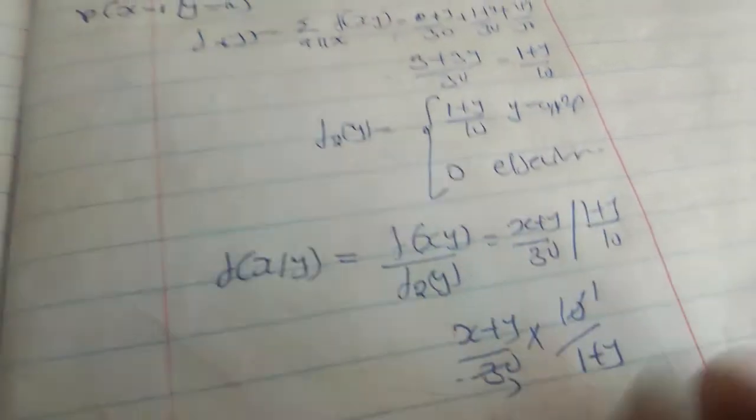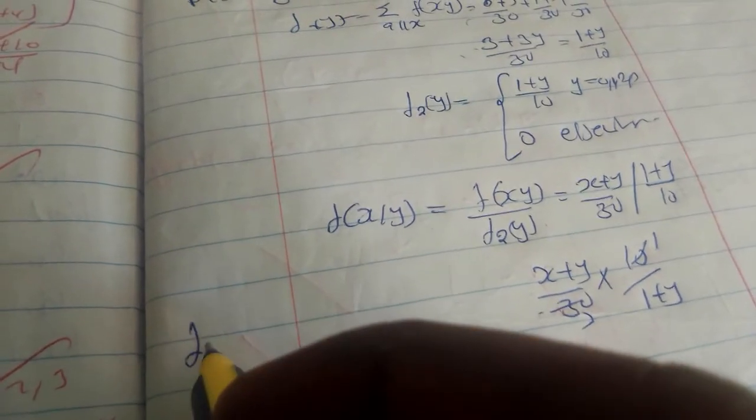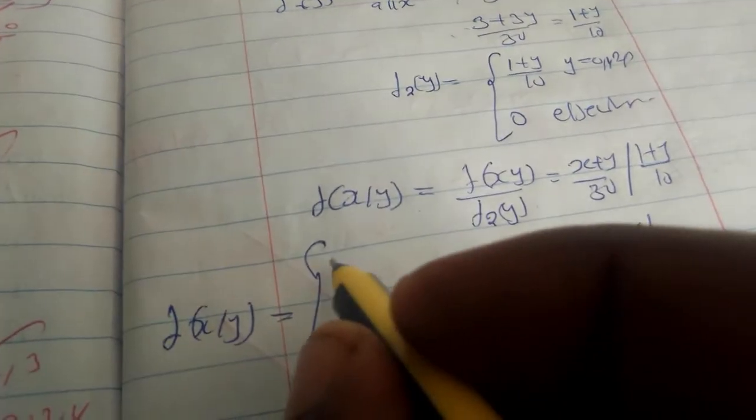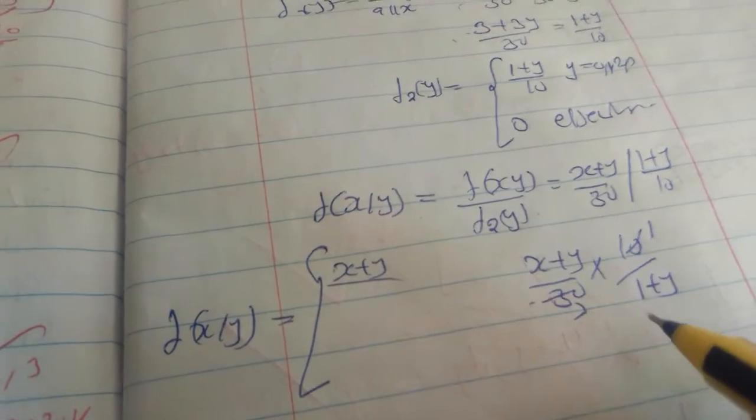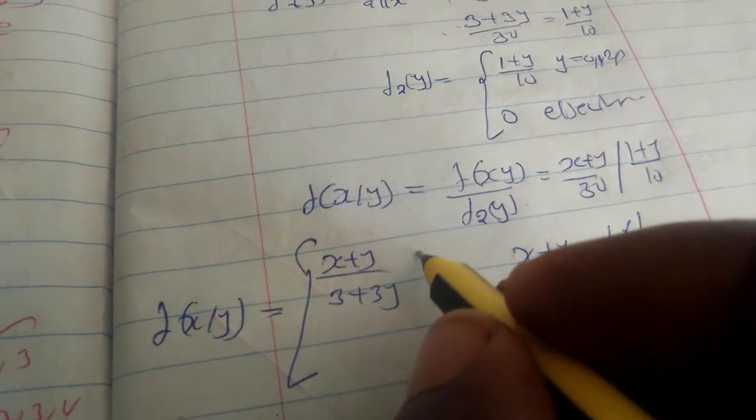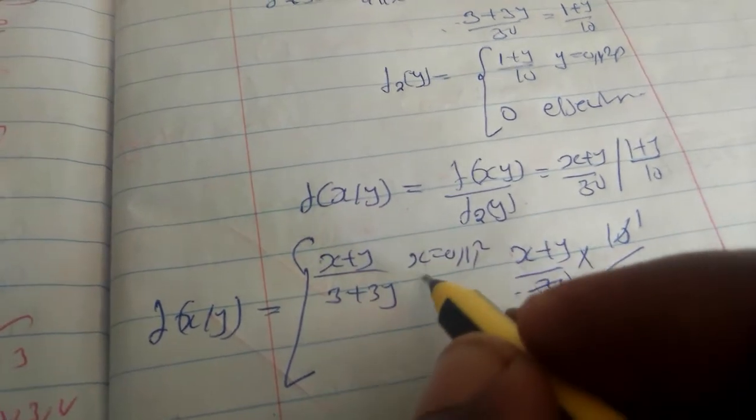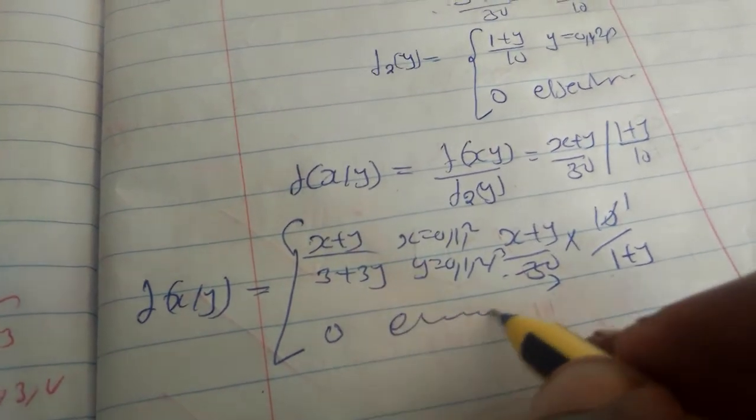So f(x|y) is equal to x plus y over 30 divided by 1 plus y over 10, which equals x plus y over 3 plus 3y, where x equals 0, 1, 2 and y equals 0, 1, 2, 3, 0 elsewhere.